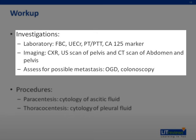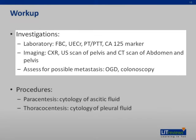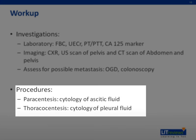A pelvic ultrasound should be done to image the ovarian mass and identify features of malignancy. The CT scan confirms the extent of disease to assist in the planning of surgical intervention. An esophagogastroduodenoscopy and colonoscopy rules out any tumor which originated from or has spread to the upper or lower gastrointestinal tract. Paracentesis and thoracocentesis can be done to assess the cytology of the ascitic and pleural fluid.